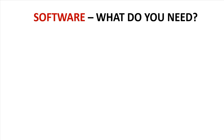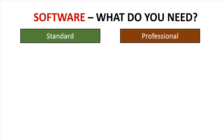Software for tax return preparation is broken down into two categories: standard and professional. Standard programs are available to the general public — you can go to your local Staples, Business Depot, or Best Buy and buy the tax software package right in the box, go home, install it, and you're up and running. Professional software is used by professional tax preparers and accountants pretty much across the nation.